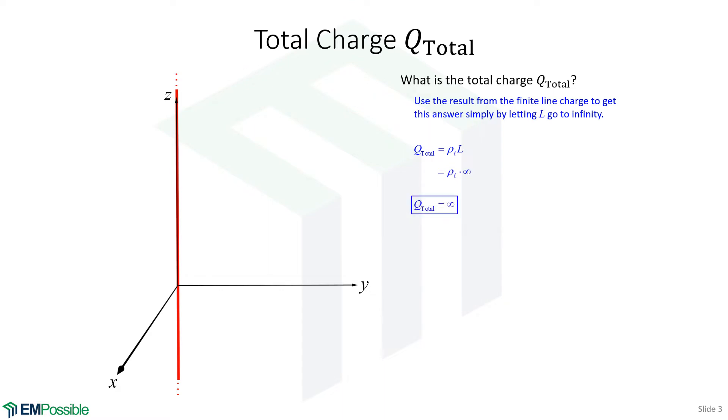That would make the total charge infinite. Unless the charge density is zero, if it's anything other than zero, we're going to have an infinite total charge. We might have a negative infinite total charge, but we'll have an infinite total charge.